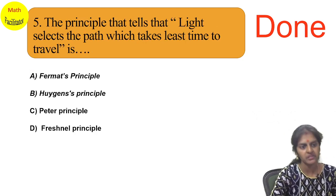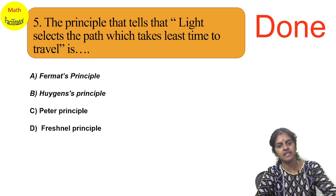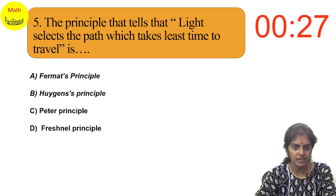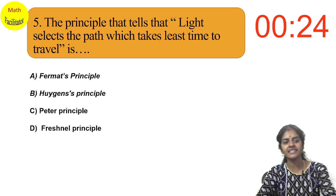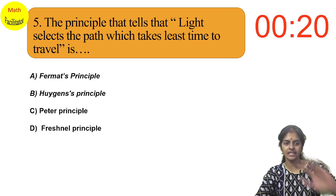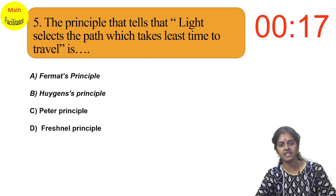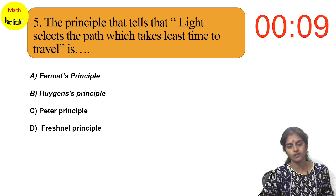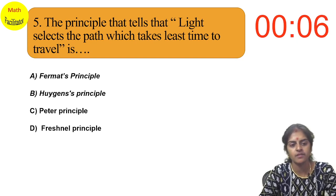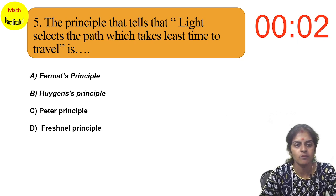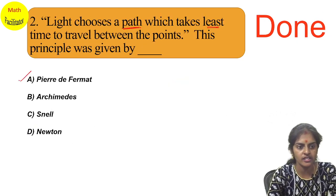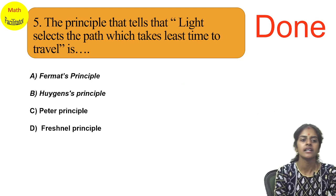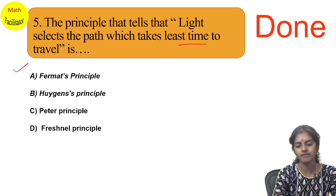The principle that states that light selects the path which takes the least time to travel — this is the same concept asked in a different way from a previous year question. Identify the correct answer from: Fermat's principle, Huygens' principle, Snell's principle, and Fresnel's principle. The answer is again Fermat's principle.